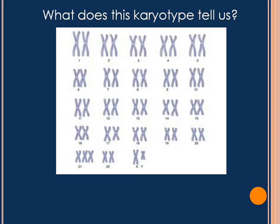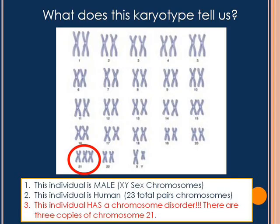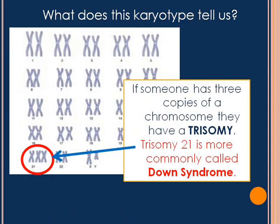Let's try another one. This karyotype shows us that the individual is male — he's got the XY set of sex chromosomes. He is human because he's got 23 total pairs, but this individual has a chromosome disorder because there are three copies of chromosome 21. When someone has three copies of a chromosome, we call that a trisomy — tri is the prefix for three, and somy means copies of chromosomes. So trisomy 21 is what you're looking at, and it's most commonly known as Down syndrome.